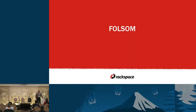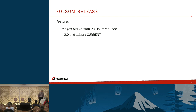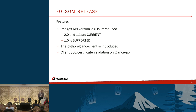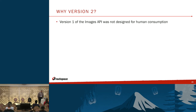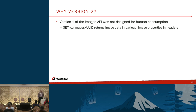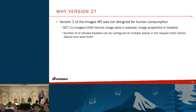With Folsom, we get some more excitement, because that's when version 2 of the API gets introduced. So 2.0 and 1.1 stay current, 1.0 is supported. We have a Python Glance client that replaced the earlier client, SSL certificate validation, tenant-specific storage in Swift — going from a single-tenant store to a multi-tenant store — and the Glance replicator to replicate images. The key question is: why version 2? Version 1 of the images API was not really designed for human consumption. For instance, when you do a GET on V1 images with the UUID, it returns the image data and payload, and all the metadata and image properties are in headers.